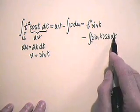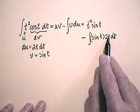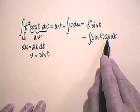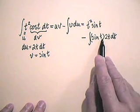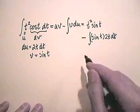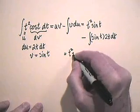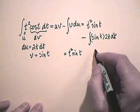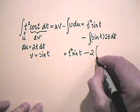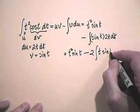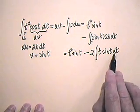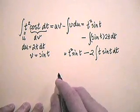We still don't have something we can easily spot the anti-derivative of, but notice again in this integral we have a product, and we can apply the same technique again. If I differentiate the t and anti-differentiate sin(t), the power of t will have gone to zero. So we have t² sin(t) minus 2 times the integral of t sin(t) dt. We can apply integration by parts repeatedly.